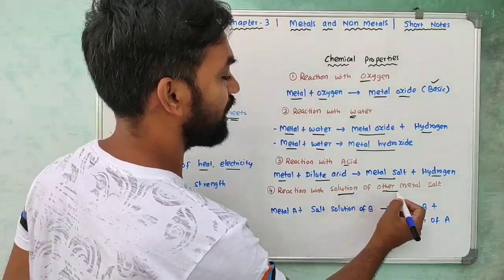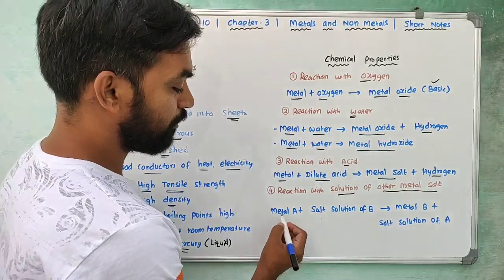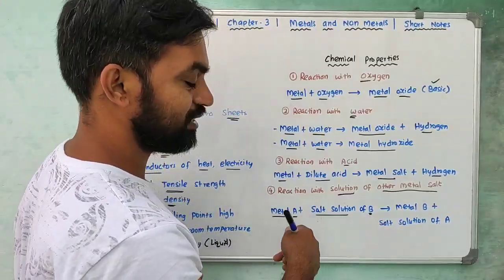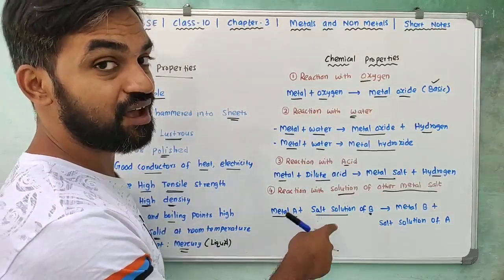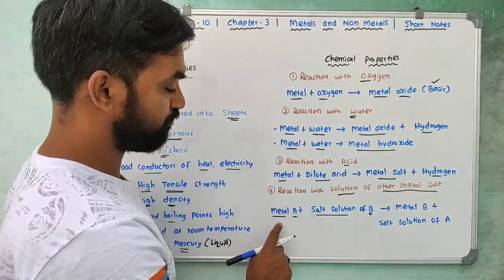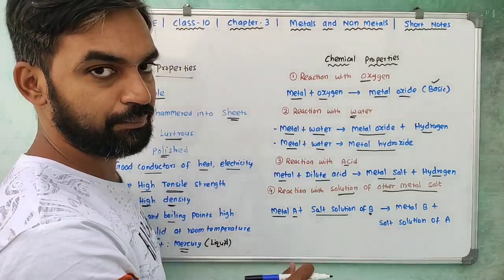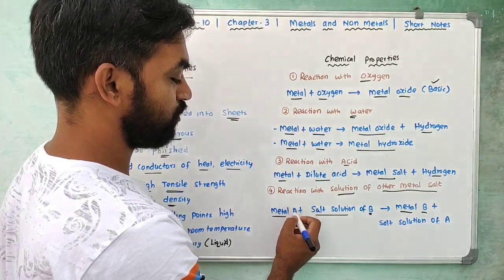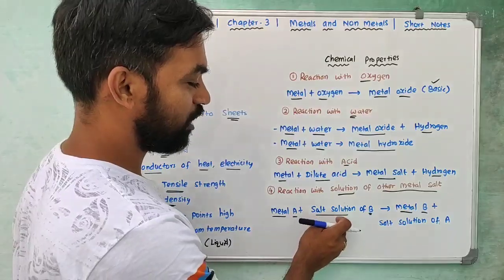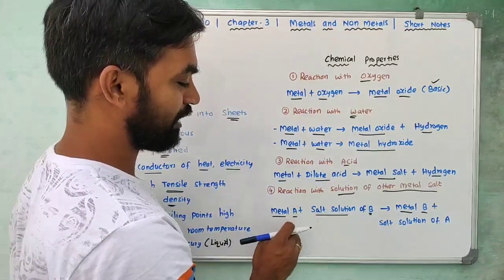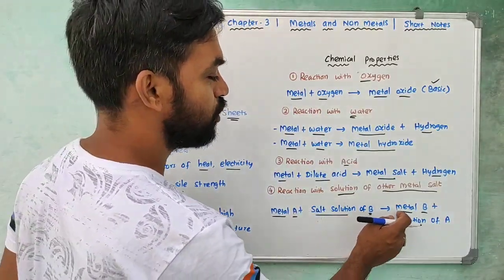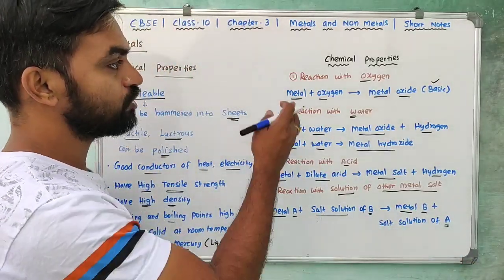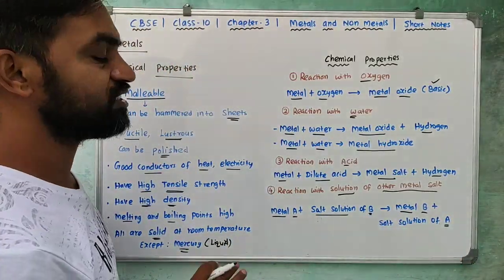Last, reaction with a solution of another metal salt. Metal A reacts with the salt solution of Metal B. More reactive Metal A displaces Metal B from the salt solution, forming the salt of Metal A and releasing Metal B. These are the chemical properties of metals.